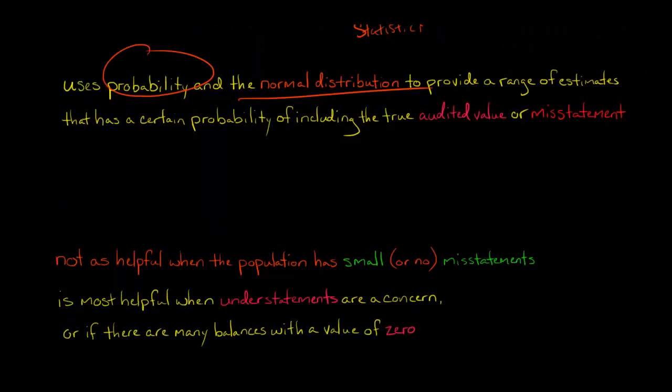When you have a situation where you're expecting very small misstatements, like if there are going to be any misstatements in the sample that they're going to be very small or maybe none at all, then classical variable sampling is not as useful as monetary unit sampling.